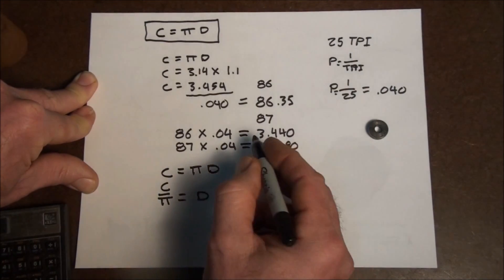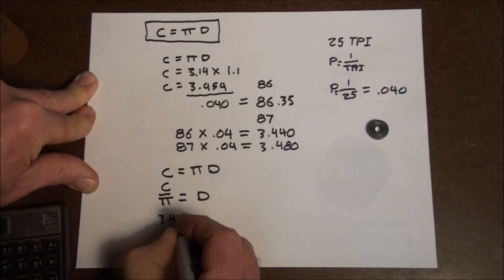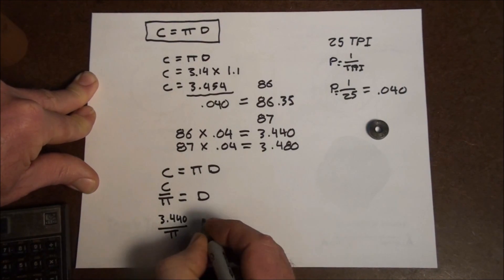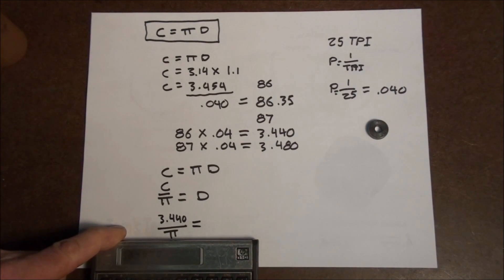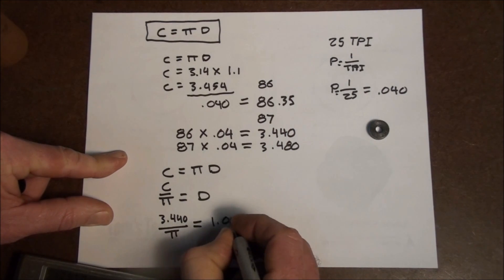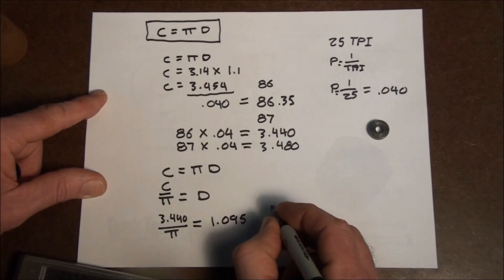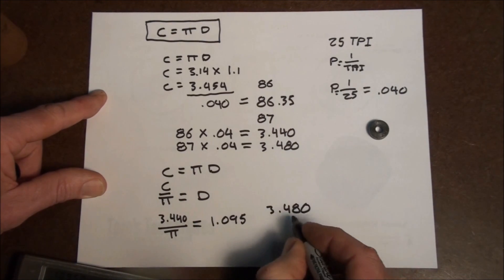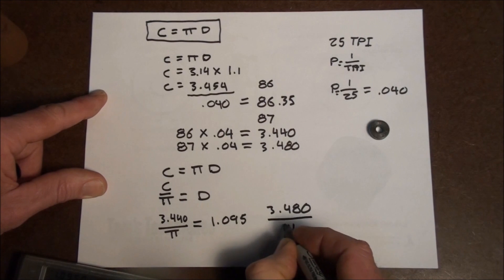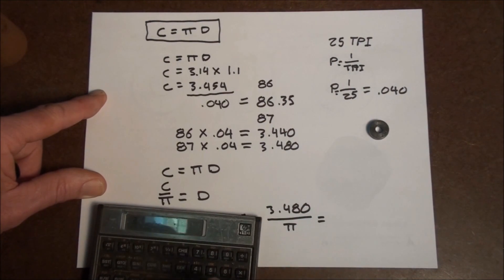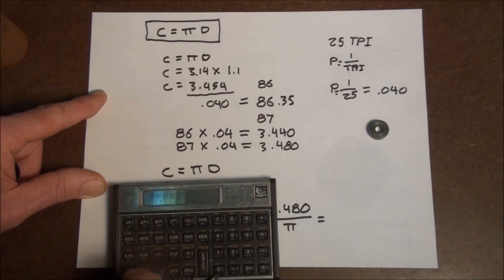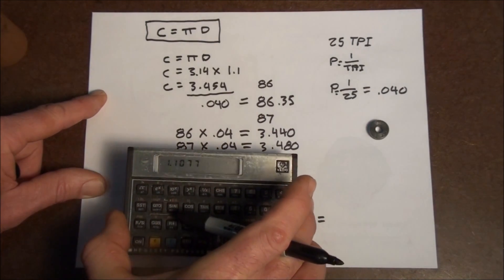3.440 is our first C. D divided by pi equals, let's see what that works out to. 3.44 divided by pi is 1.095 inches in diameter. And let's figure it out for this 3.480 circumference here. Divide that by pi. And that works out to 3.480 divided by pi is 1.108.